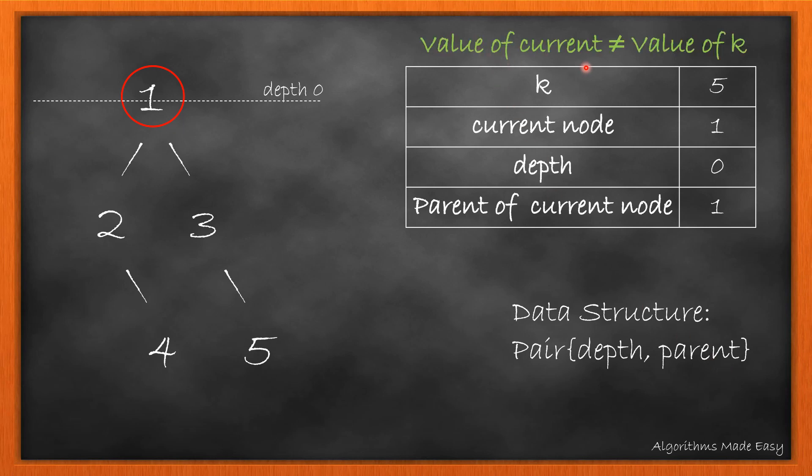As the value of current node is not equal to the value of k, we will search its left node. Now current node becomes 2 and its depth will be 1.